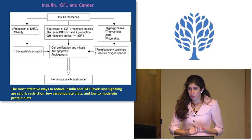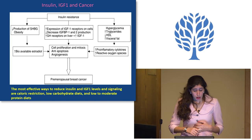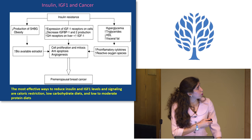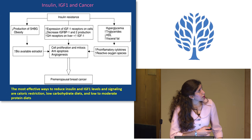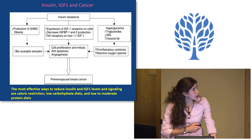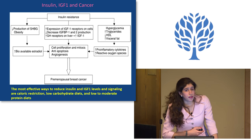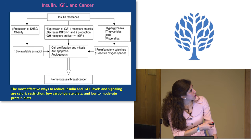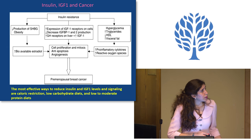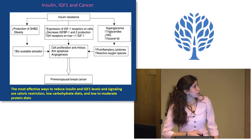We talked about estrogen and CRP — both can be reduced by weight loss. Now for insulin, IGF-1, and their connection to cancer: insulin resistance can reduce production of sex hormone-binding globulin, making estrogen more available, and by itself can increase IGF-1 receptor expression, have cross-reactivity with the IGF receptor, and increase IGF-1 in the circulation. Both of these factors promote mitosis, have anti-apoptotic effects, and promote angiogenesis. Additionally, other metabolic changes with insulin resistance lead to inflammation, which also drives cell growth and survival.